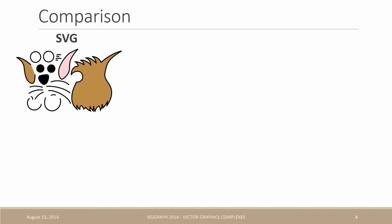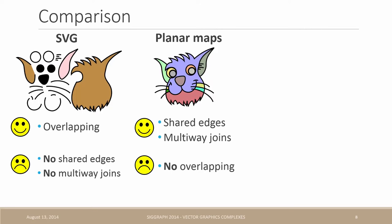So basically, on the one hand, we have SVG, made of overlapping objects, giving the artist a lot of freedom, but it does not support shared edges or multi-way joints. And on the other hand, we have planar maps, which overcome these limitations, but the price to pay is the lack of overlapping, which is a basic feature provided by SVG.